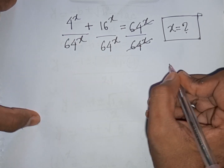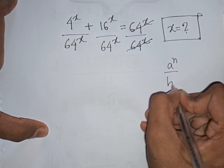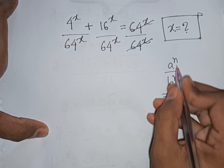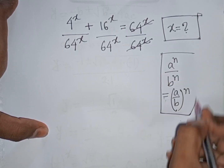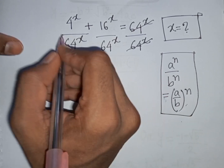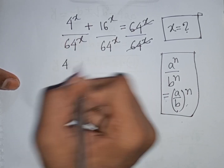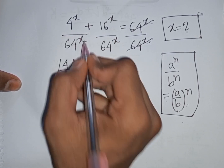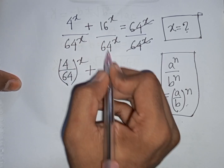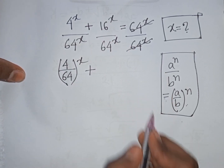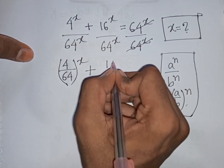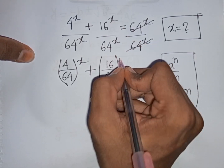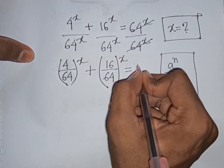The remaining terms have the same power x but different bases. Using the exponential rule a^n · b^n = (a·b)^n, we can write (4/64)^x + (16/64)^x = 1.